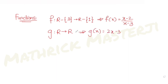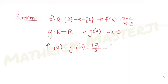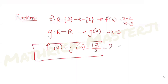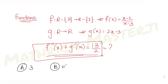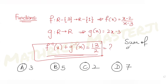The question asks us to figure out the sum of all values of x for which f inverse of x plus g inverse of x equals 13 over 2. We need to figure out when this condition is true. The answer choices given are 3, 5, 2, and 7.